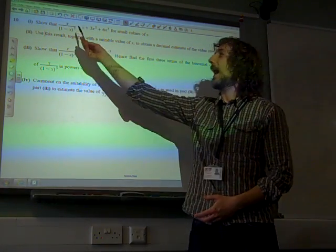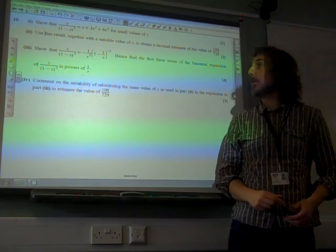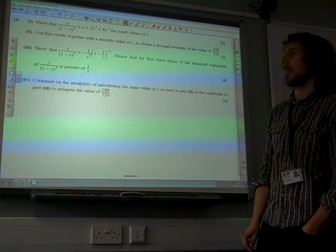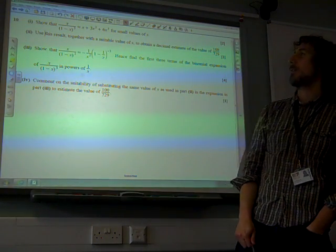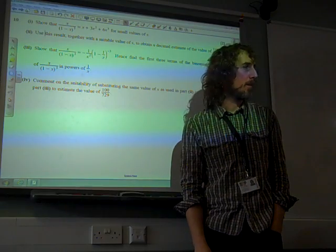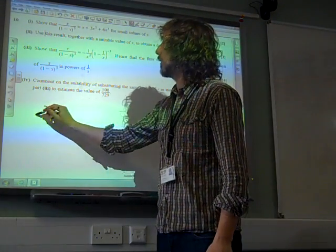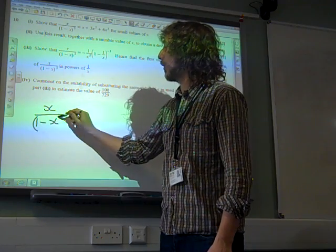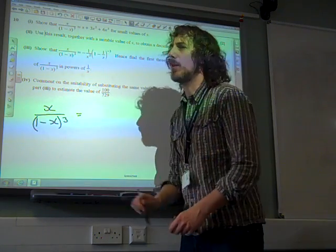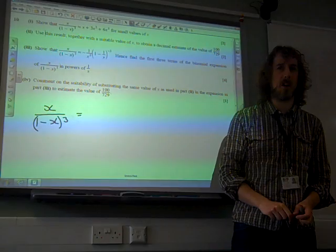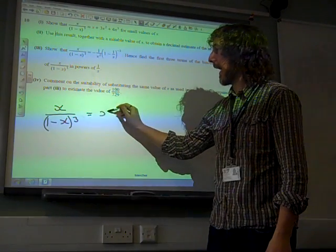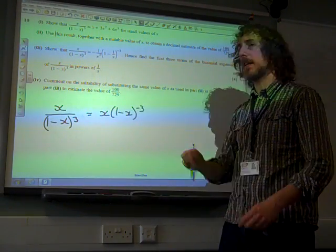Show that x over 1 minus x all cubed is approximately equal to x plus 3x squared plus 6x cubed for small x. Well, this isn't the format at the start, is it? We've got x over 1 minus x all cubed. Of course, if we're going to do some binomial expansion stuff, we need to think of this as being x times 1 minus x to the minus 3.